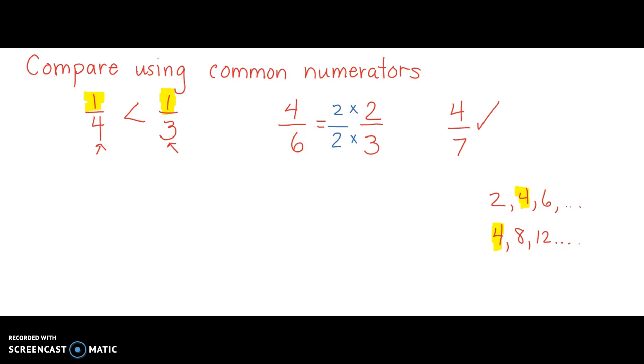So if 2/3 is the same as 4/6, then now I can compare using my common numerators. All I have to do is look at my denominators, and I know that 6 pieces out of a whole would be larger than 7 pieces out of a whole, so that means 4/6 is greater than 4/7, or in other words, 2/3 is greater than 4/7.